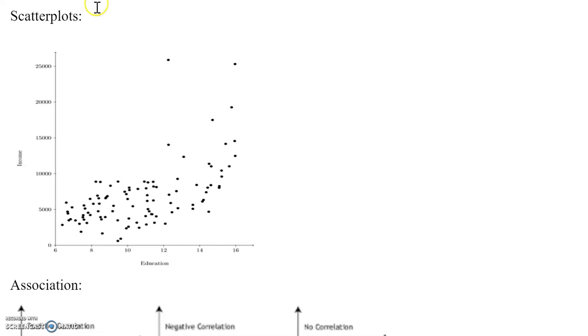Next is scatterplot, which is just a display to show the relationship between the x variable and the y variable. This is an example of a scatterplot. As you can see, on the x-axis you have education, and on the y-axis you have income. So this scatterplot is a display to show the relationship between education and income.